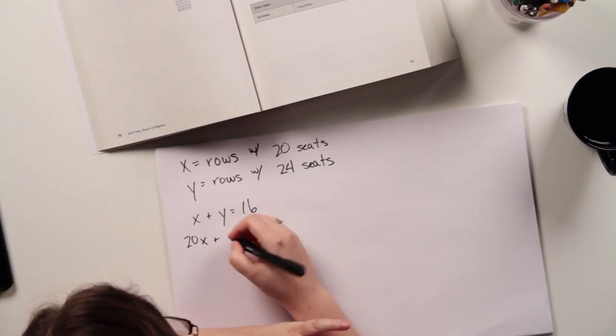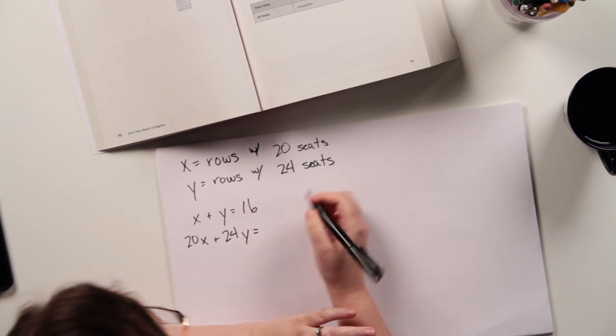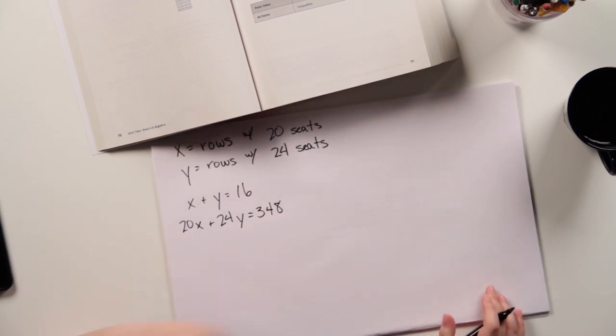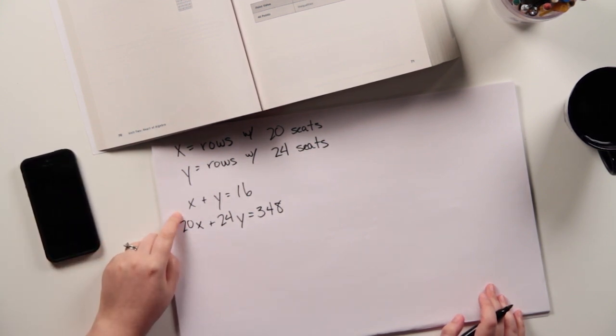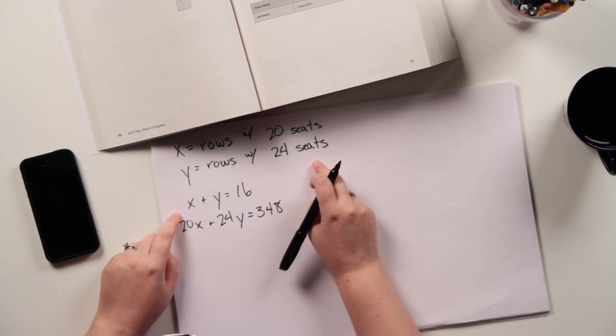x plus y, the number of rows, is equal to 16. And then I've got the total number of seats. So 20x, because x is the number of rows with 20 seats, times 20 will give me the total number of seats, plus the same thing with y, 24y equals all together 348. And then I get to solve for the system of equations. And do I want to do substitution or combination? I like combination better, so I'm going to do it that way, which means I need to multiply this entire equation by, let's see, I want to find the number of rows with 24 seats, which means I want to isolate y and get rid of x. So I'm going to multiply that entire first equation by 20.